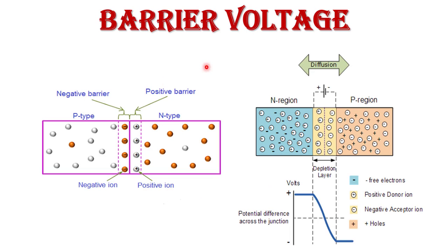Now, what is barrier voltage or barrier potential? Due to the presence of immobile ions near the junction — positive immobile ions on the n-side and negative immobile ions on the p-side — an electric field is created across the junction. This electric field is known as barrier potential, junction potential, or cut-in voltage. The polarity of the barrier potential is decided by the type of immobile ions present on the two sides of the junction. As seen in the diagram, the negative terminal of barrier potential is on the p-side and positive is on the n-side.